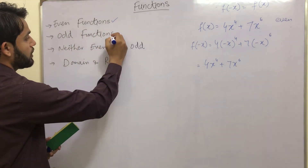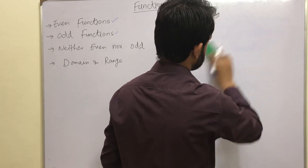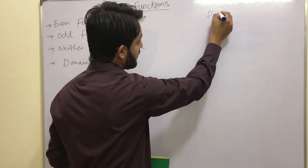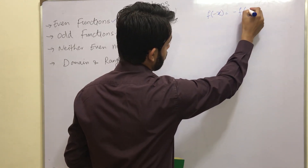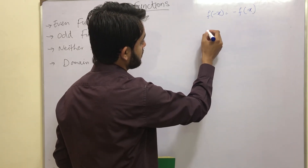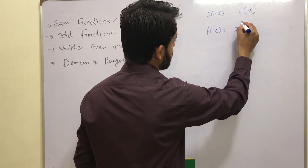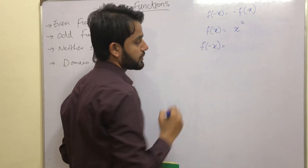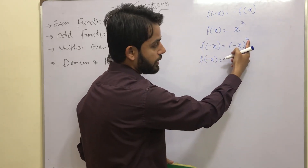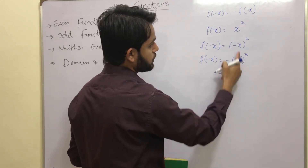Now let's come to the next point: odd functions. According to the definition, a function is said to be an odd function if f(-x) = -f(x). Let's consider the example f(x) = x³. Replace x with -x on both sides. We have an odd power, so the minus does not become positive — it comes outside, giving f(-x) = -x³, and x³ is basically your f(x).